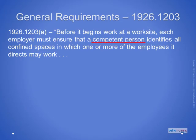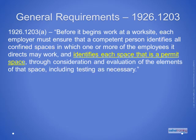The term competent person appears in the very first paragraph of the General Requirements found in Section 1926.1203. Paragraph A requires that all employers have a designated competent person identify all confined spaces in which one or more of the employees they direct may perform work, including temporary service employees. The competent person must then identify each space that meets the definition of a permit-required confined space based on their evaluation of the space and any necessary tests. This is essentially a two-step process.